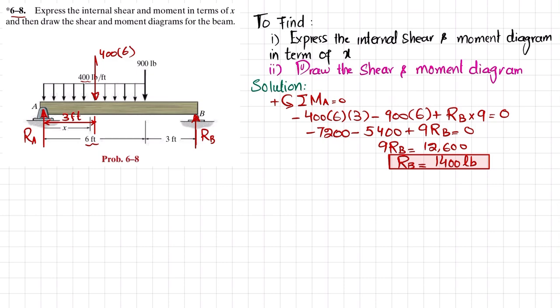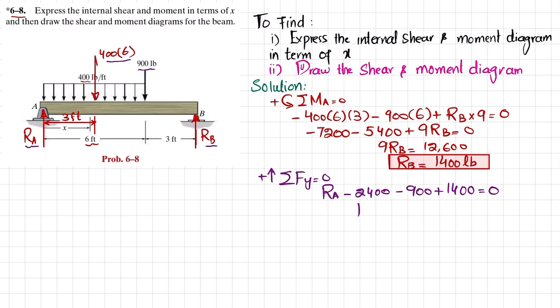Now finding Ra using the equilibrium condition that the sum of all forces along the Y direction equals zero, with upward forces positive. So Ra − 2400 − 900 + Rb = 0, substituting Rb = 1400: Ra − 2400 − 900 + 1400 = 0, giving Ra = 1900 pounds.